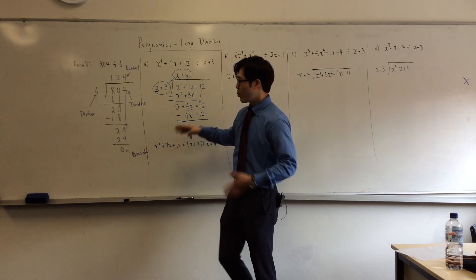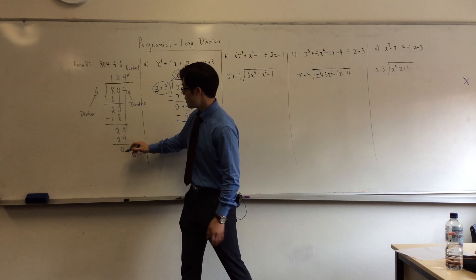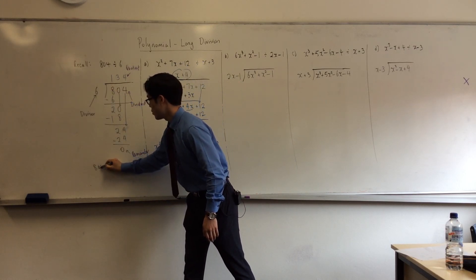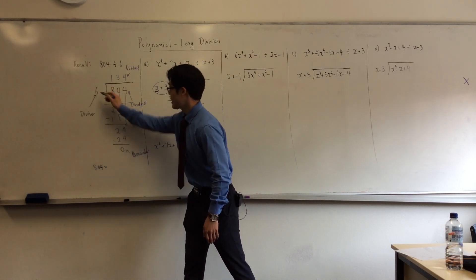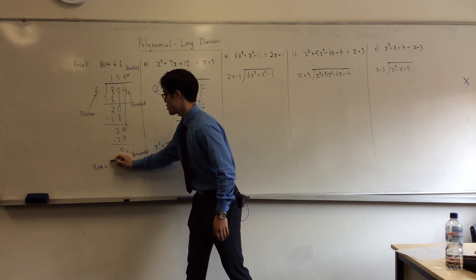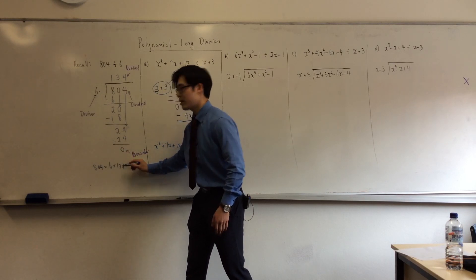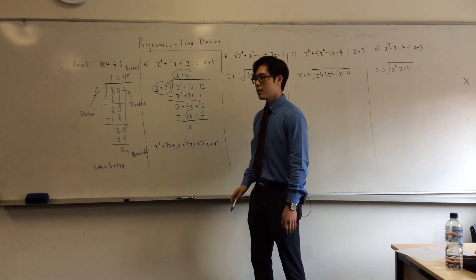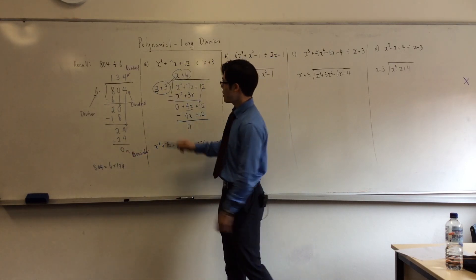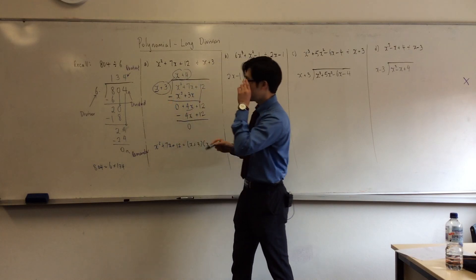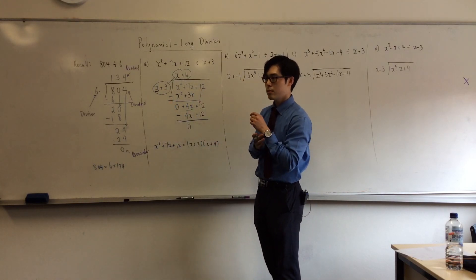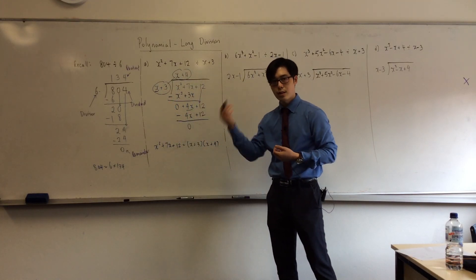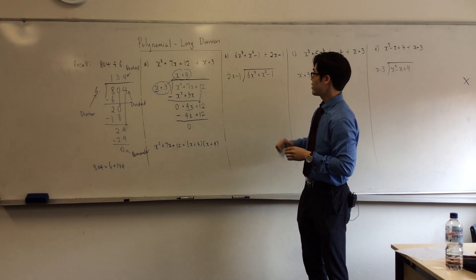What that means, girls, is that x squared plus 7x plus 12 is equal to x plus 3 times x plus 4 — these two are the products of that. Where does that logic come in? Just like how 804 in this case means 6 times 134. Similarly, that times that is equal to the dividend. We're going to continually apply the same logic.